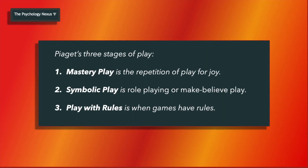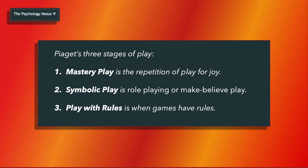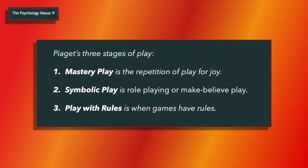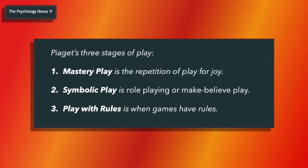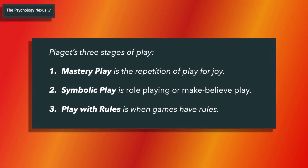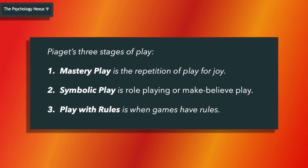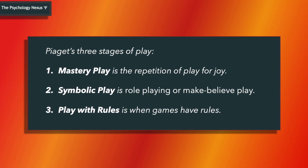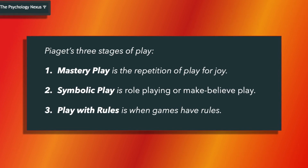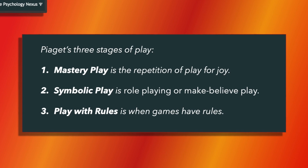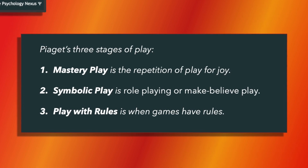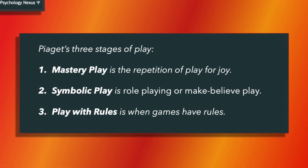Piaget argued that the three stages of play correspond to the first three stages of cognitive development. Mastery play is a repetition of play for the joy of it. Symbolic play involves fantasy and role play, and incorporates symbols — for example, a hat is symbolic of a play role. Play with rules is when games have rules, which can sometimes dominate the play.